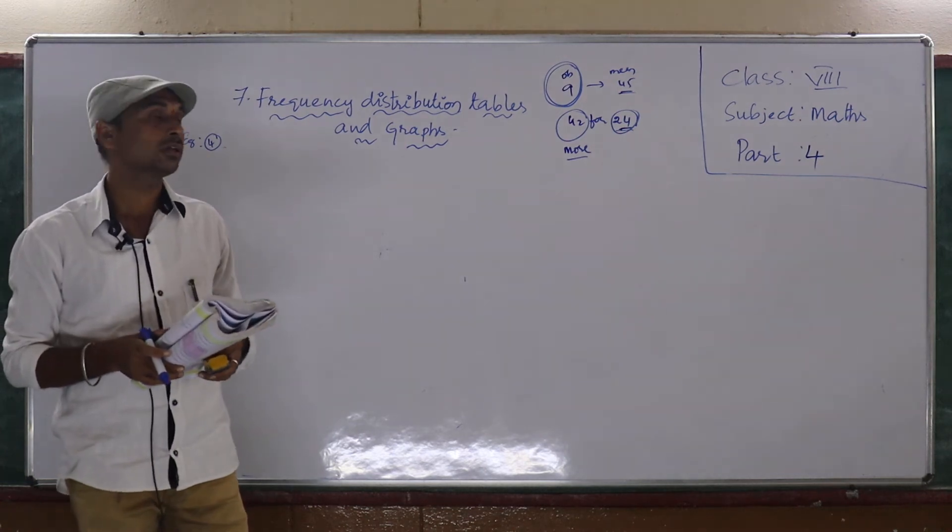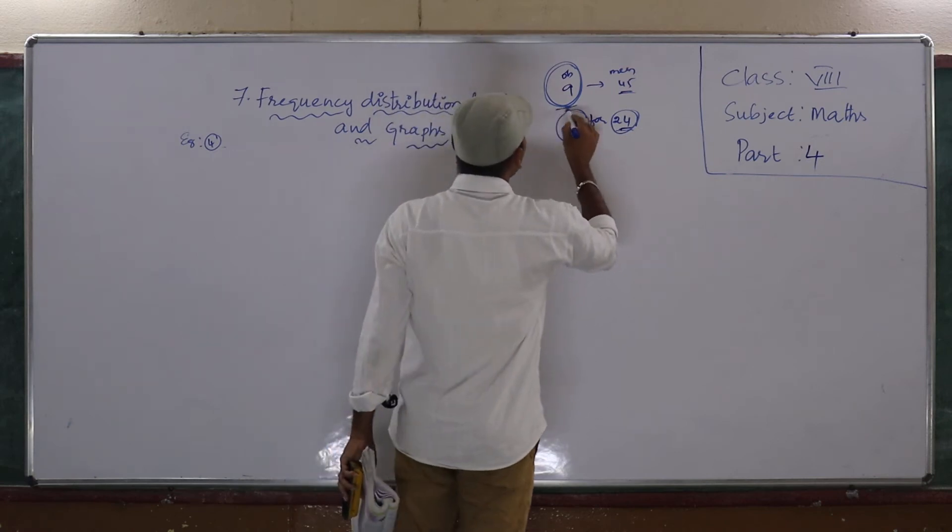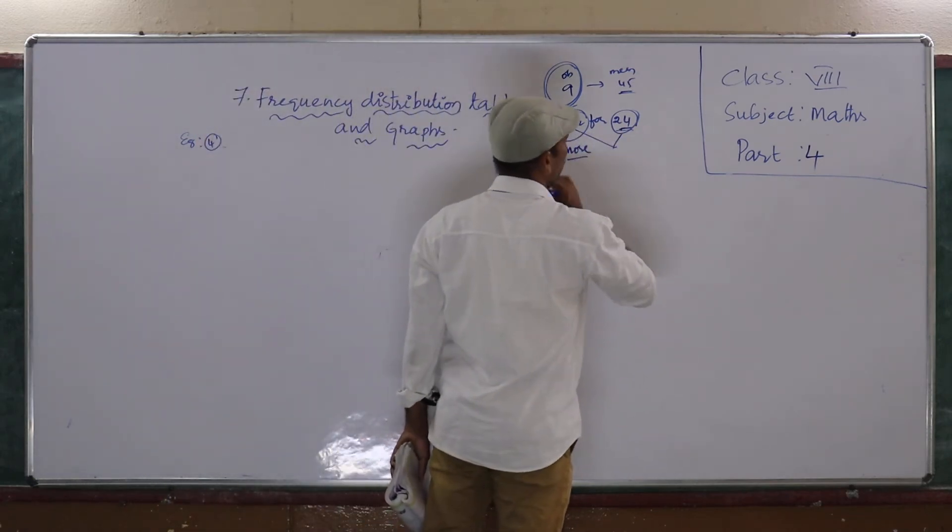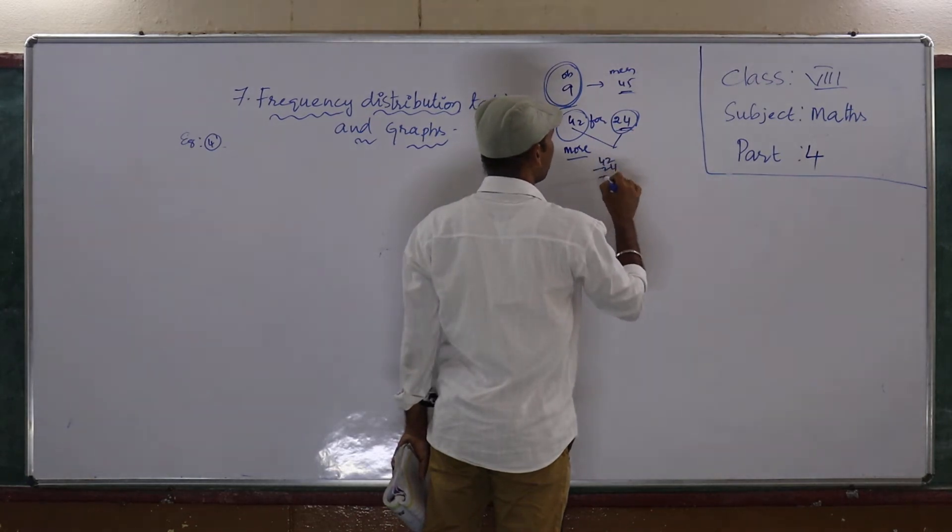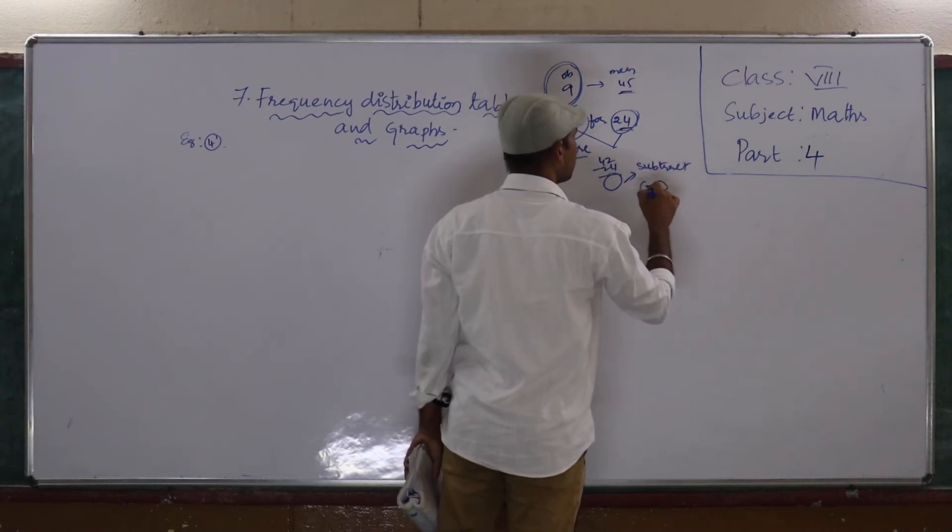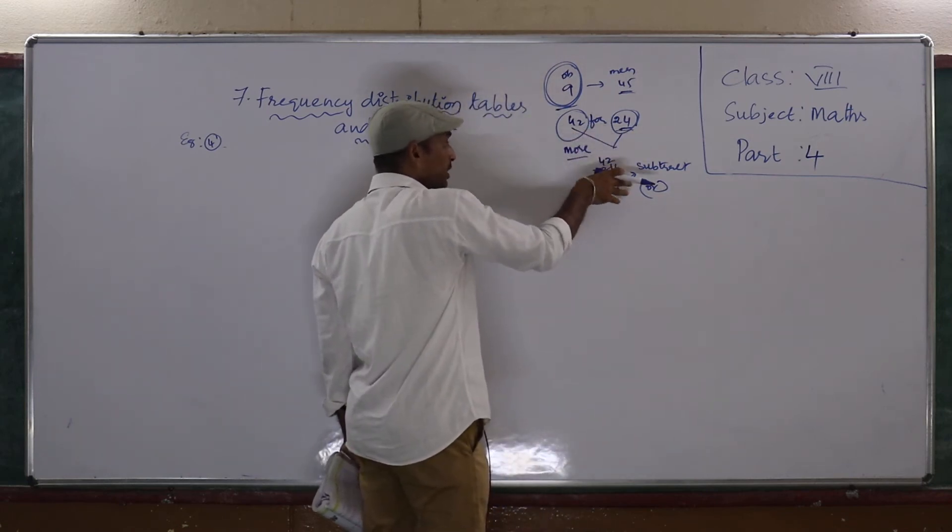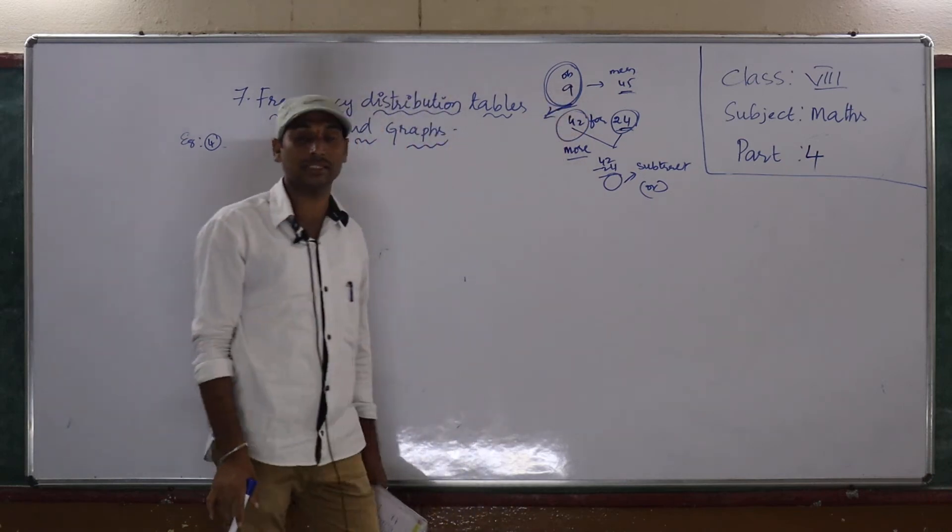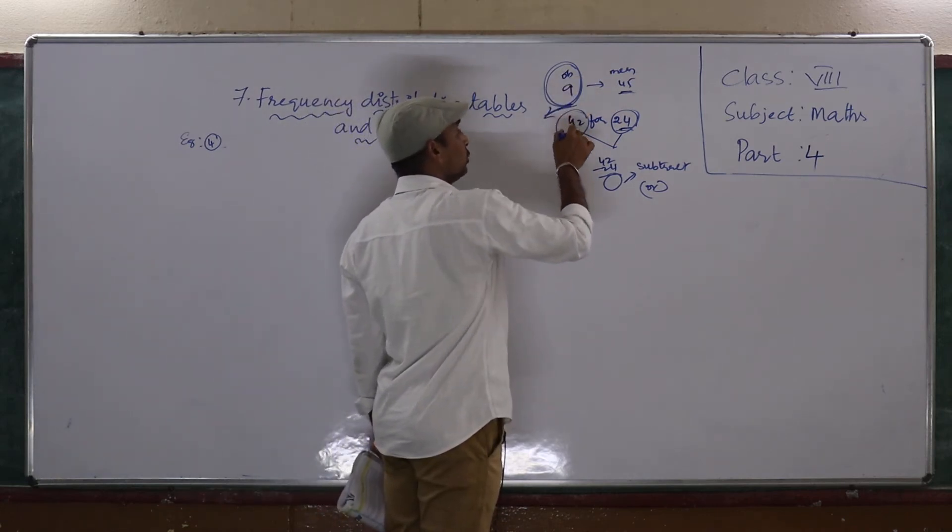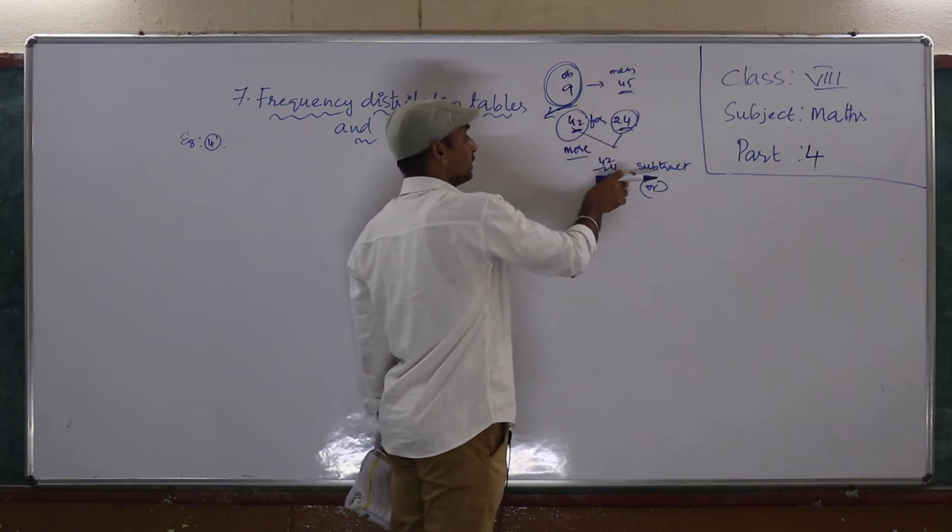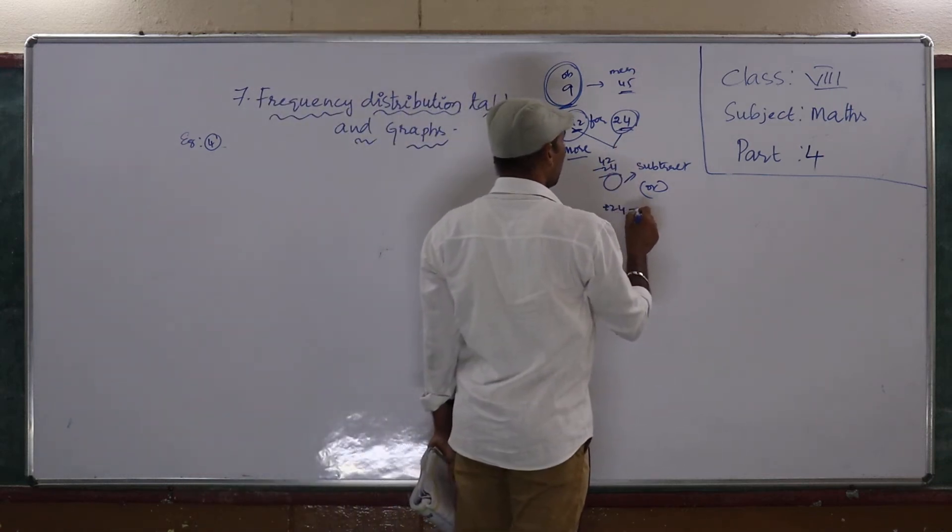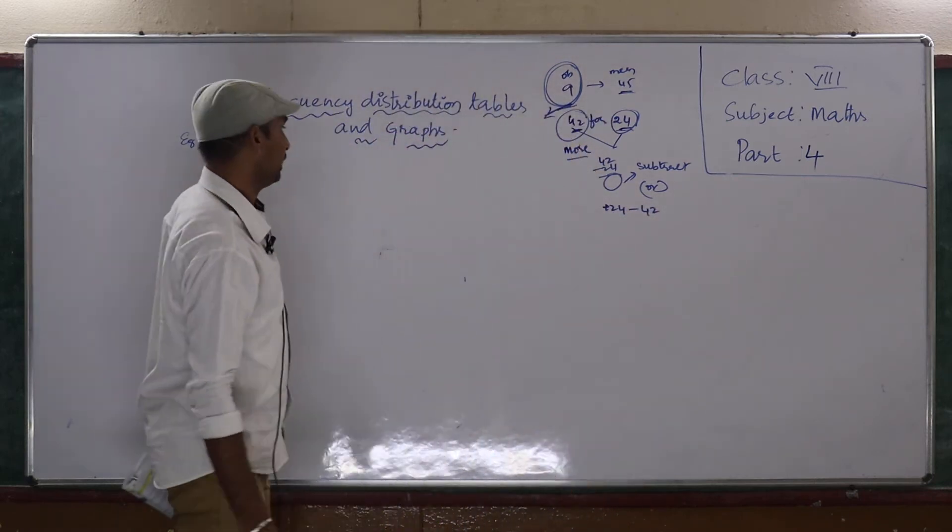So first we have to find out, what is the sum of 9 observations? After that, then the difference between these two, 42 minus 24, how much we will get? That we have to subtract. Or two conditions I am going to say. The difference between these two numbers, we have to subtract from the sum of 9 observations. Because when we are finding the sum of 9 observations, you have written 42, more value you get. So that is why this value subtract. Otherwise, add 24, then minus 42. You can do like this.